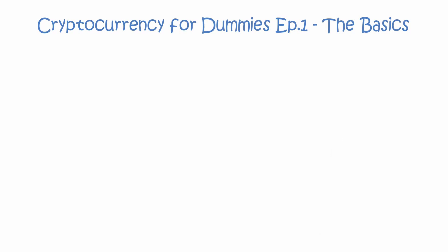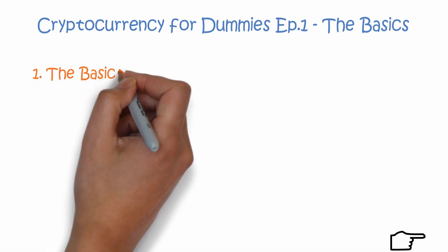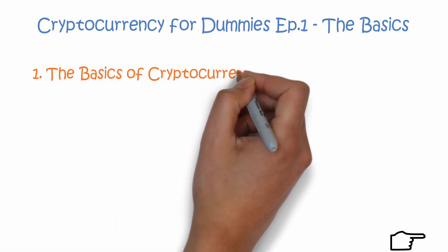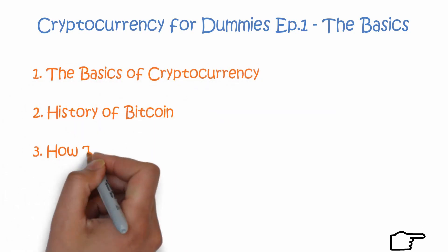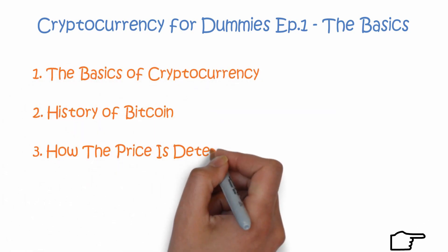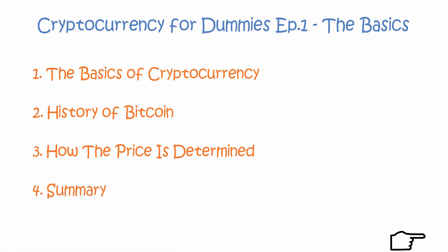What's going on guys? Welcome to a new series about cryptocurrency. The first episode will be about the basics of cryptocurrencies. Click the subscribe button so you don't miss out the future episodes which will come out in the next couple weeks. This video is divided into four sections: the basics of cryptocurrency, history of bitcoin, how the price is determined, and a summary. Let's get started.